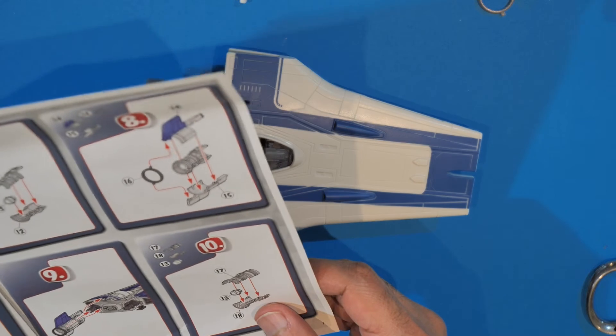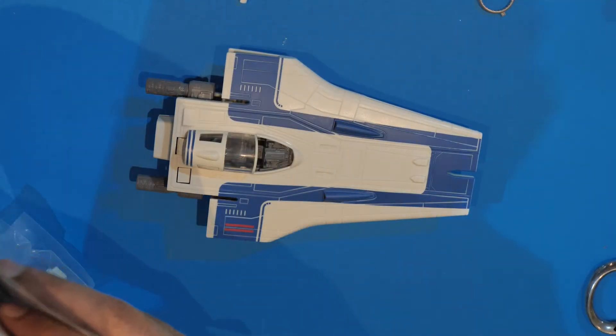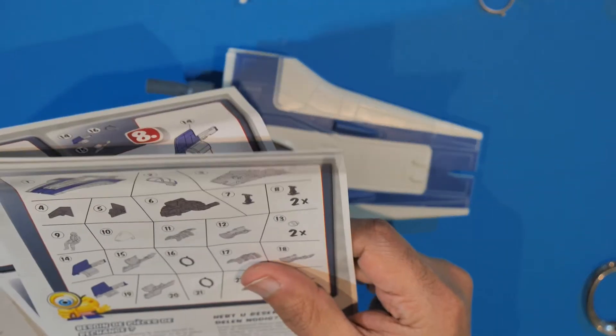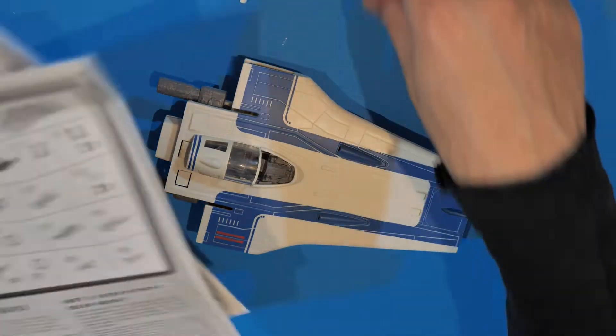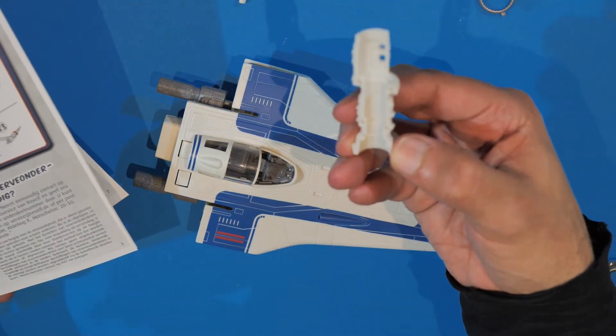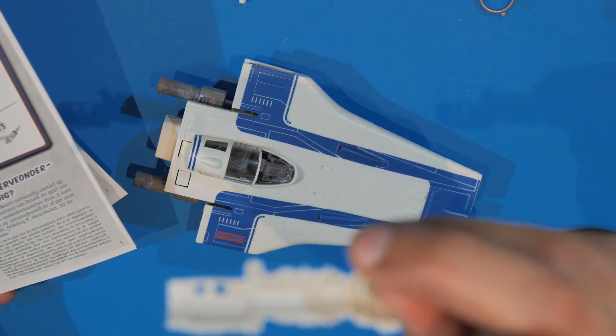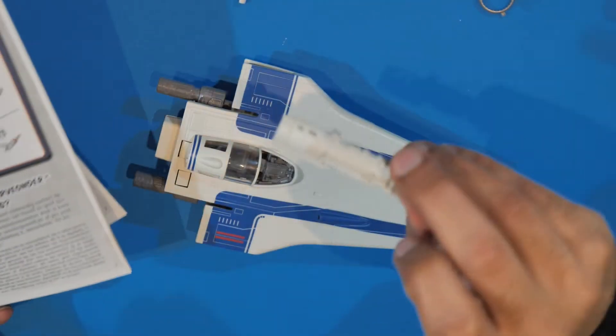All right then, so 11 and 12 and 13, how do you tell a part? Because it doesn't say on it, oh yes it does. So the part number is actually printed on the inside of these things.